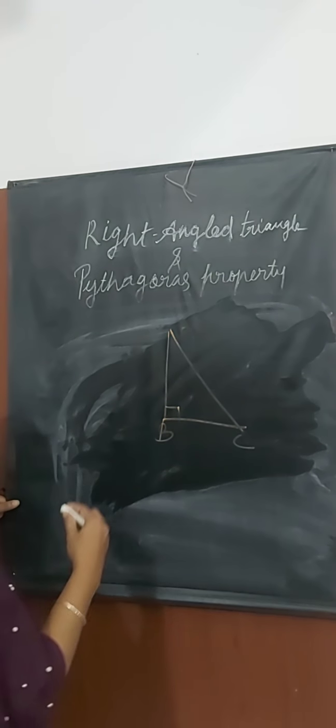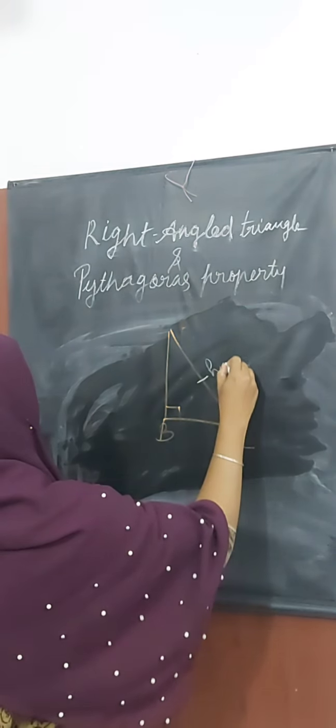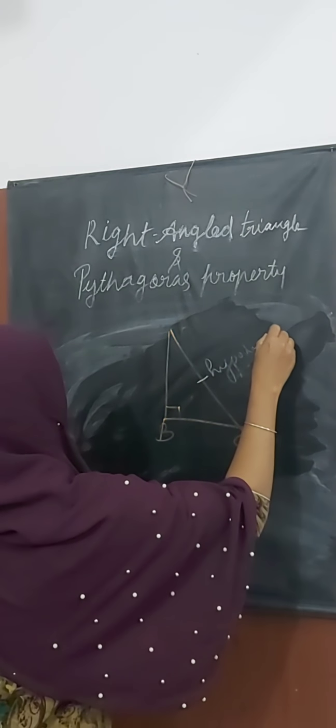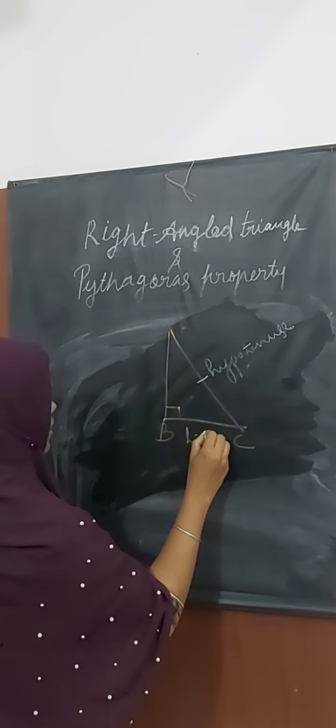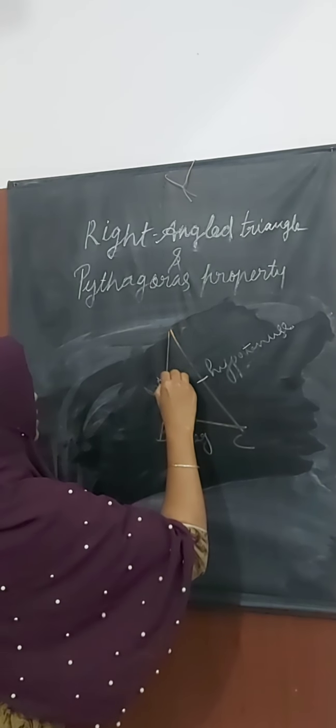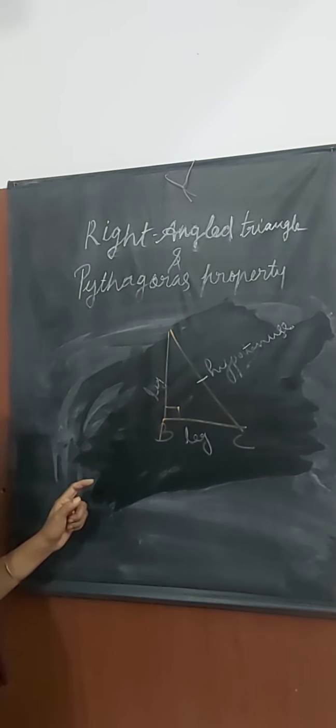The side opposite of the right angle in a right angle triangle is called hypotenuse. And the other two sides are called legs. Hypotenuse is the biggest side of the right angle triangle.